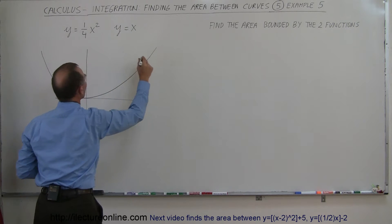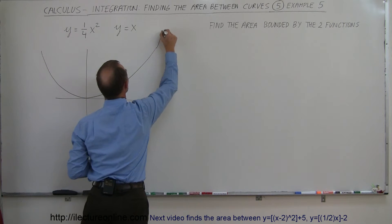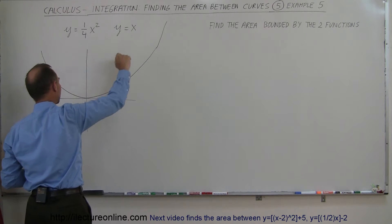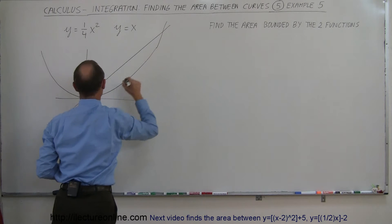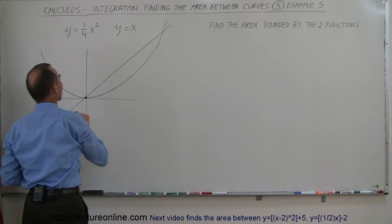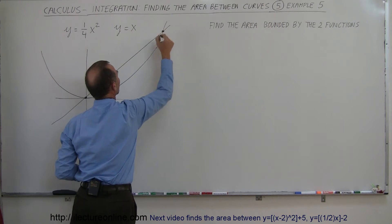And then the next one is a straight line, y equals x, like that. That would be a straight line at a 45 degree angle. Notice that the two functions are going to cross at the origin and they're going to cross up here somewhere.